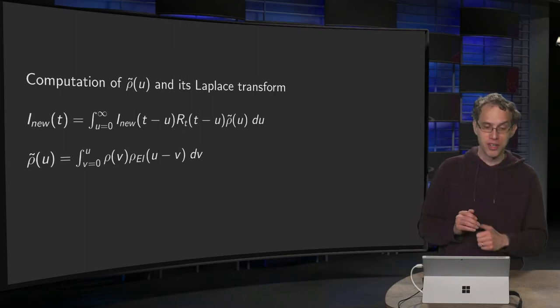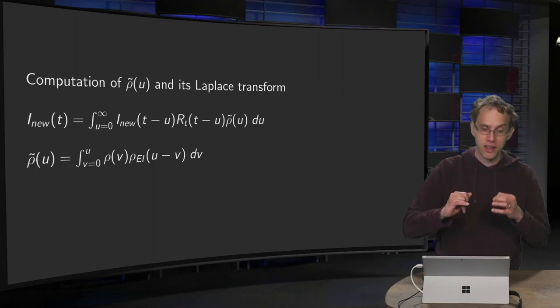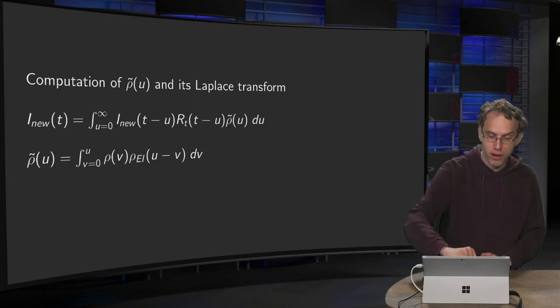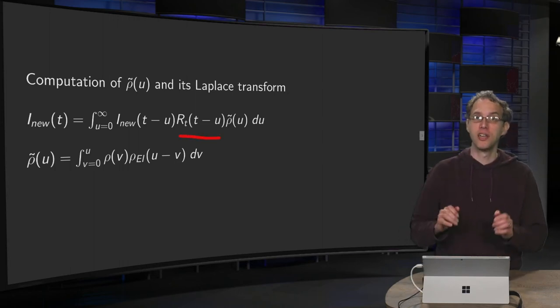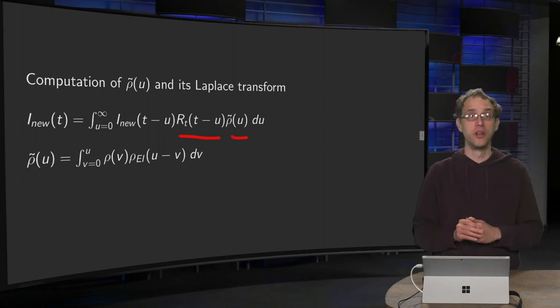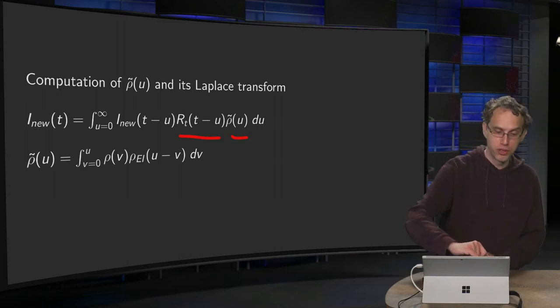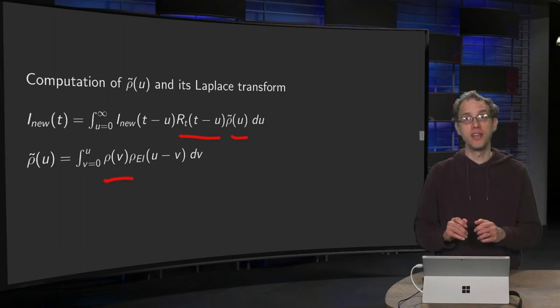So remember what we need. We need to compute our ρ tilde, because in our formula for our reproduction number RT, we had i nu, newly infectious people, and we also had our ρ tilde of u. So we need that function first. And remember it was defined as the convolution of two probability densities, ρ of v and ρEi of u minus v.